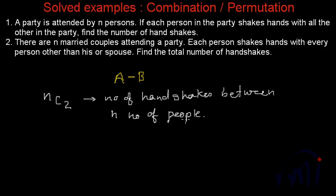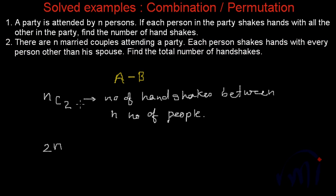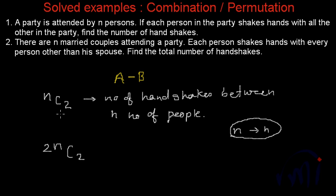In the second variation there is a very small trick. The second statement says: there are n married couples attending a party. The number of people attending will be 2n, because there are n couples and each couple has two people. Each person shakes hand with every person other than his or her spouse. So the total number of handshakes would normally be 2nc2, but each married couple is not shaking hands among themselves. There are n couples, meaning n handshakes to discount, so we subtract n from 2nc2.